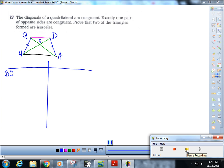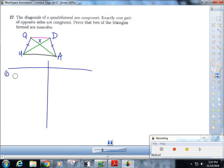Okay, so actually I'm not given that it's an isosceles trapezoid. I'm only given that QU is congruent to DA and QA is congruent to DU, right?